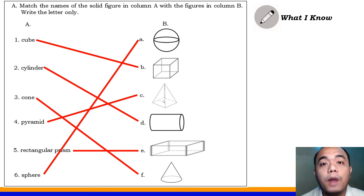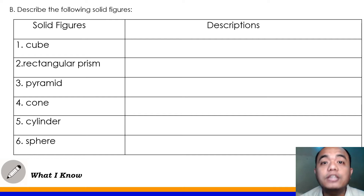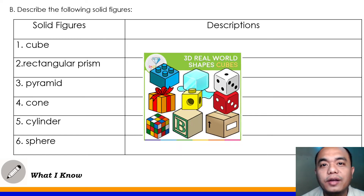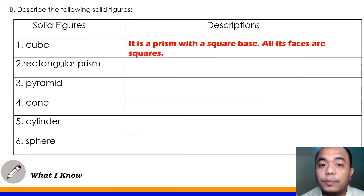Let's proceed to part B. For part 2, letter B — describe the following figures. Alam ko na medyo mahirap yung part na to kasi walang option na ibibigay sa inyo. But try to answer it in your own words. Number 1, cube. What do you think is the description of the cube? It is a prism with a square base. All its faces are squares.